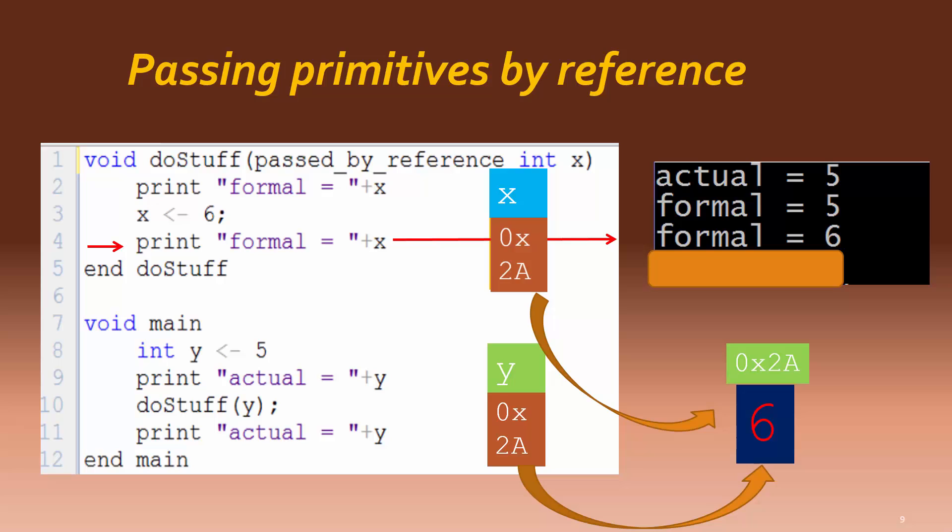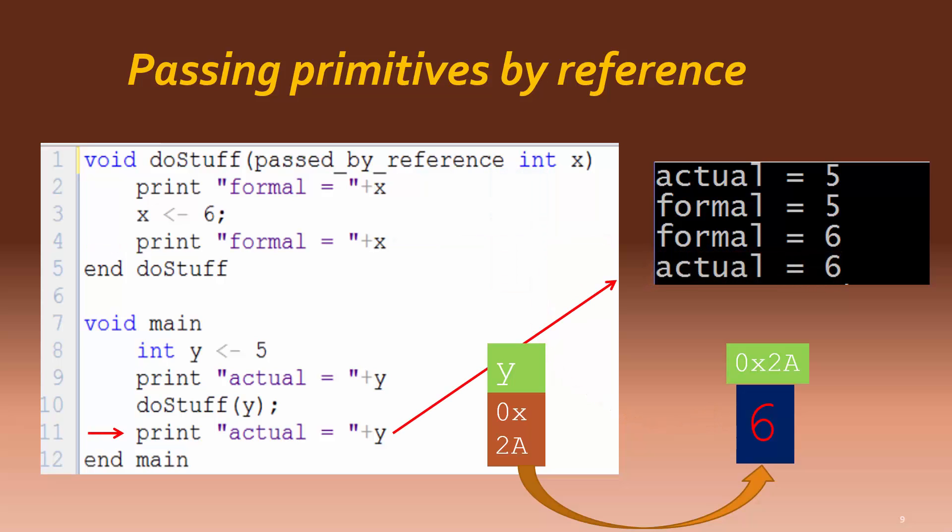The change that is made by the formal parameter immediately changes the actual parameter, so that when control returns to main, the final output for the actual parameter is now 6, the same as the formal parameter's last output. This is just like the Google Docs example that was mentioned earlier, where changes made by one person sharing the document automatically change it for everyone.